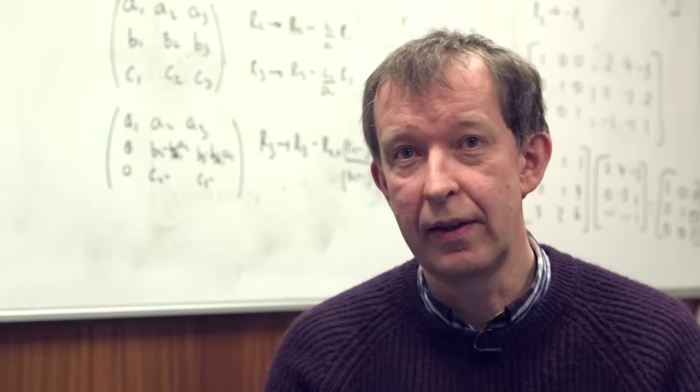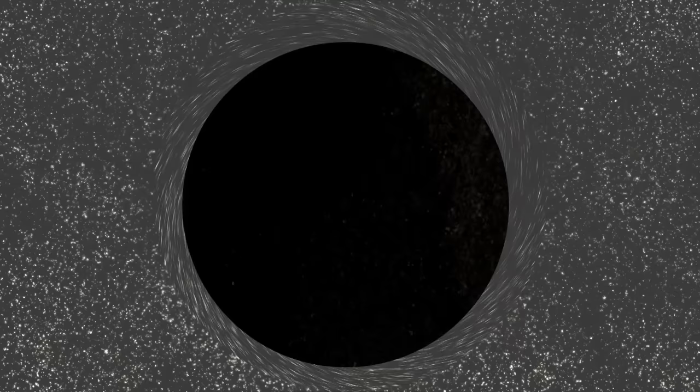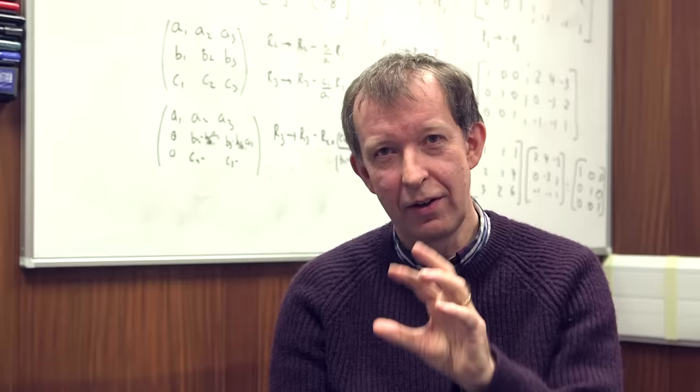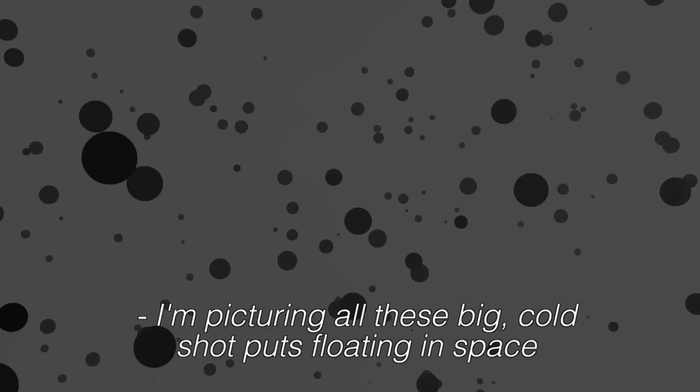And there are also possibilities that we actually don't really understand the end point of a black hole evaporating. One result is that perhaps they form a relic. They evaporate, evaporate, evaporate down to around the Planck scale, and then they just stop. They stop evaporating anymore. And then you've got all these relics of about the Planck scale circling around the universe. There are reasons people don't like it to do with information and storing of information, but it's not totally ruled out as a model. I'm picturing all these big cold shot puts floating in space.